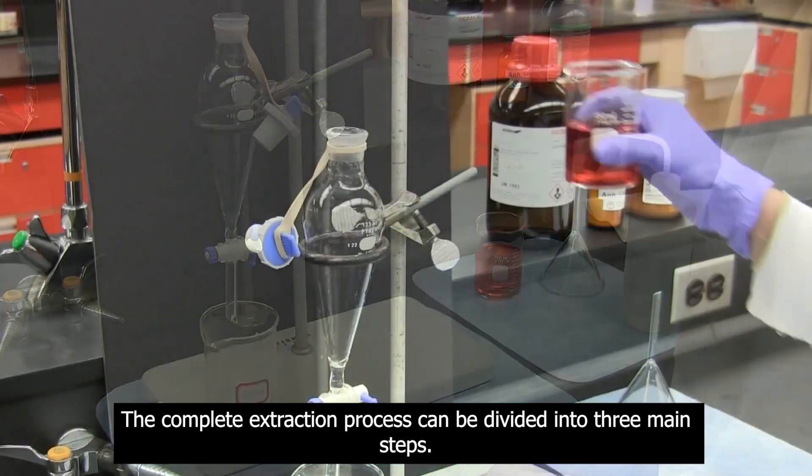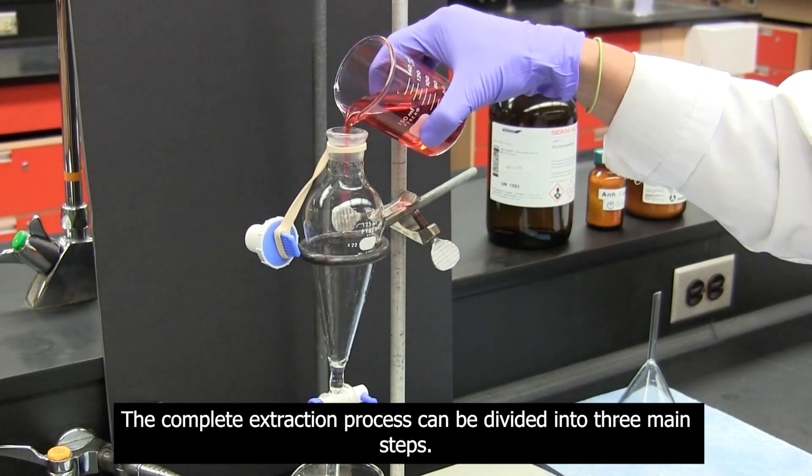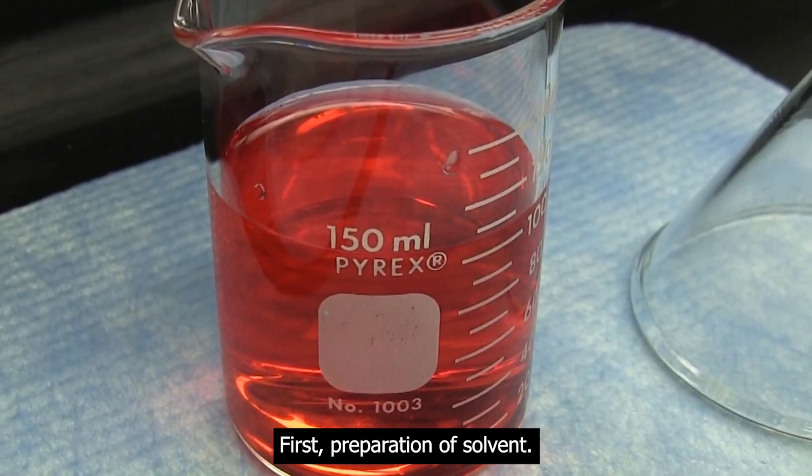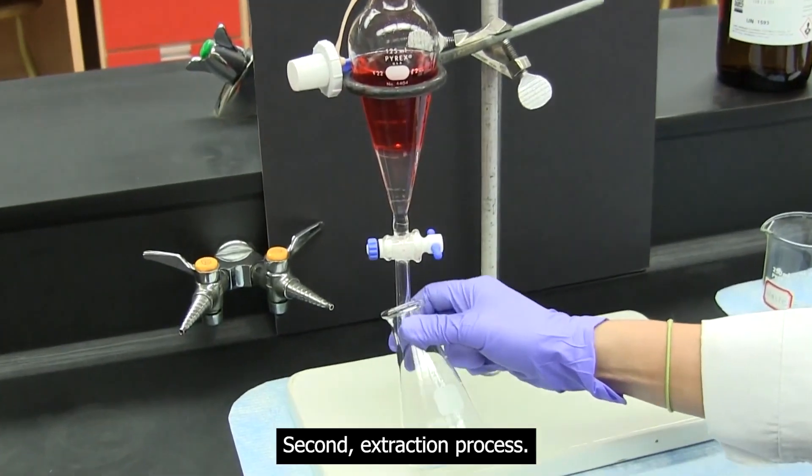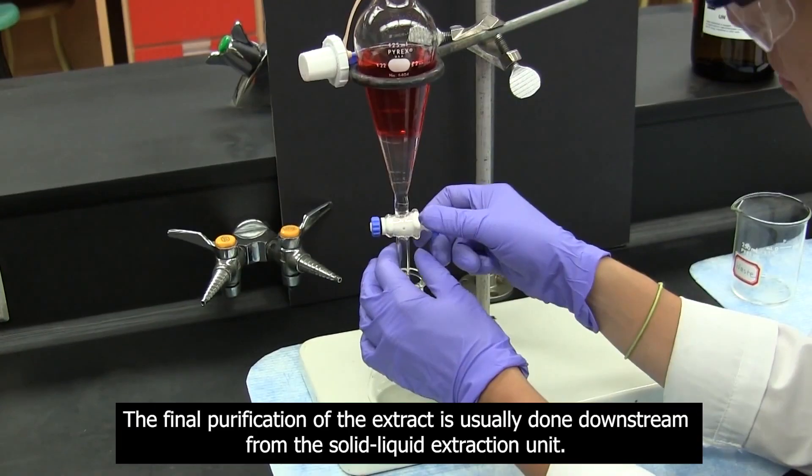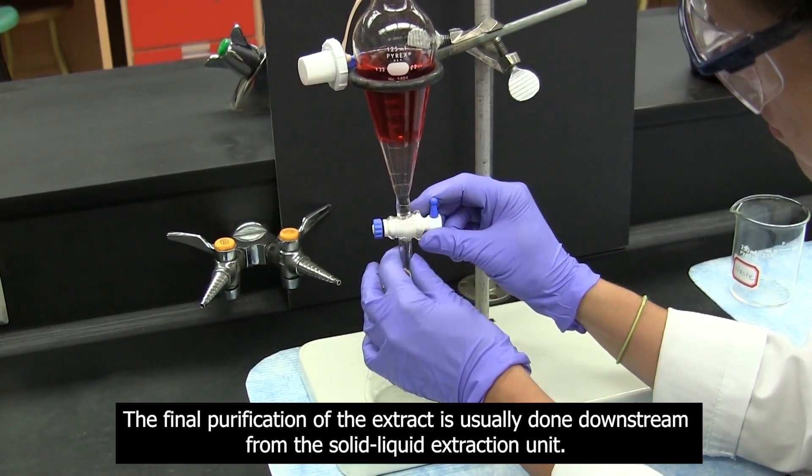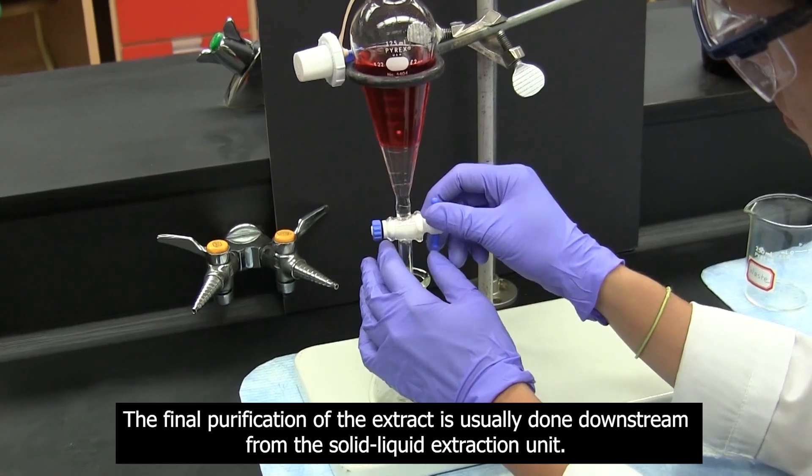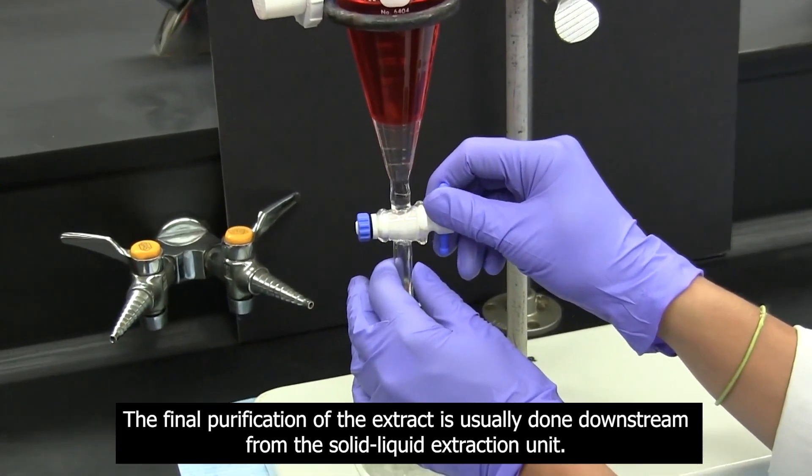The complete extraction process can be divided into three main steps. First, preparation of solvent. Second, extraction process. And lastly, pre-concentration of the extract. The final purification of the extract is usually done downstream from the solid liquid extraction unit.